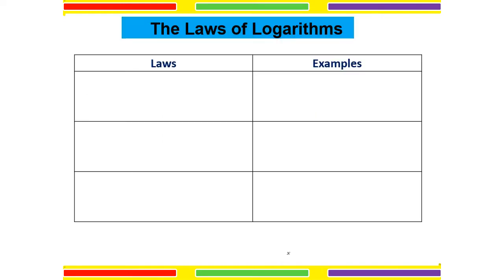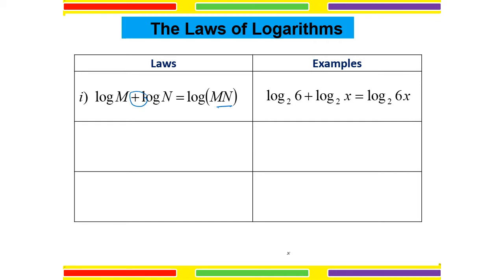The law of logarithm — these three laws are really important and we will use them frequently. The first one: log M plus log N equals log of M multiplied by N. We have addition between two logs, so we multiply the values inside the log. For example, log base 2 of 6 plus log base 2 of X — same base — so it becomes log base 2 of 6X.